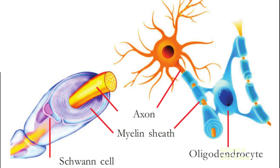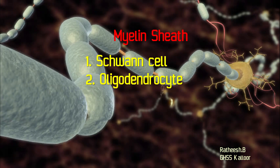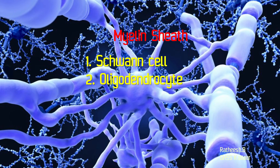Observe the given image. The myelin sheath is formed in two ways. One: myelin sheath formed by Schwann cells. Two: myelin sheath formed by oligodendrocytes.